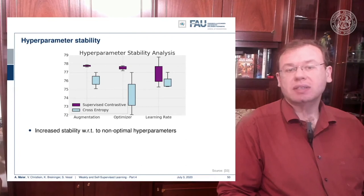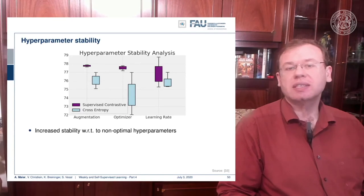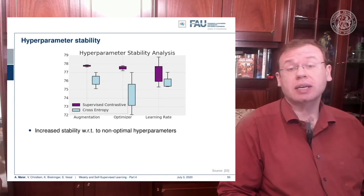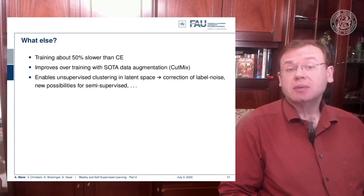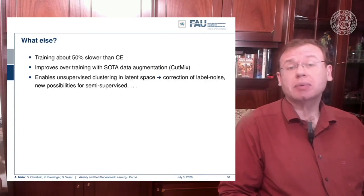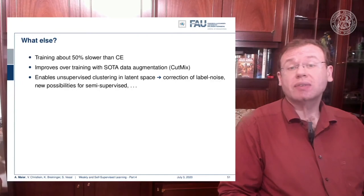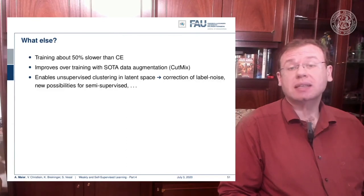The supervised contrastive loss is very stable with respect to hyperparameters — you don't see large variations as with supervised cross-entropy loss in terms of learning rate, optimizer, or augmentation. Training is about 50% slower than with cross-entropy loss. It does improve over training with state-of-the-art data augmentation like CutMix, enables unsupervised clustering in latent space, allows correction for label noise, and introduces new possibilities for semi-supervised learning.